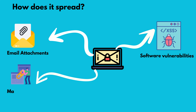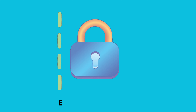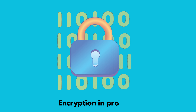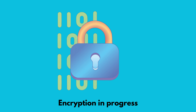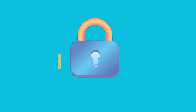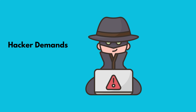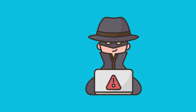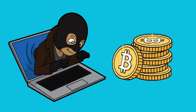Ransomware typically spreads through email attachments, malicious links, or software vulnerabilities. Once a system is infected, the ransomware will begin to encrypt the victim's files, often using strong encryption algorithms that are difficult to crack. The hacker then demands payment in exchange for the decryption key that will unlock the victim's files. Payments are typically made in cryptocurrency, which can make it difficult to trace the criminals.